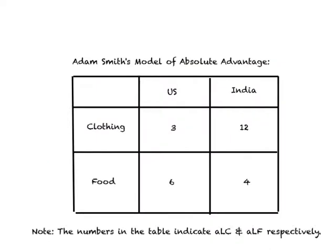In order to understand and appreciate the Ricardian model of foreign trade, let us briefly revisit Adam Smith's model of absolute advantage, where the case he looked at is that the U.S. is better than India in one line of production, and India is better than the U.S. in another line of production, and hence this becomes the basis for foreign trade.